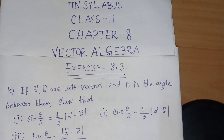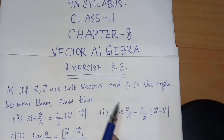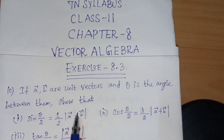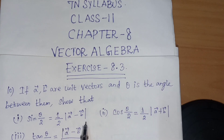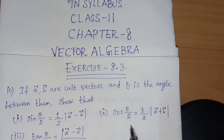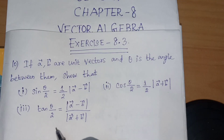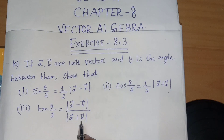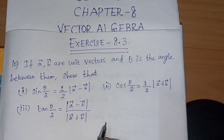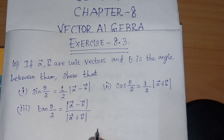Exercise 8.3. If A vector and B vector are unit vectors and theta is the angle between them, show that: sin(θ/2) equals half times |A vector minus B vector|; cos(θ/2) equals half times |A vector plus B vector|; tan(θ/2) equals |A vector minus B vector| divided by |A vector plus B vector|.